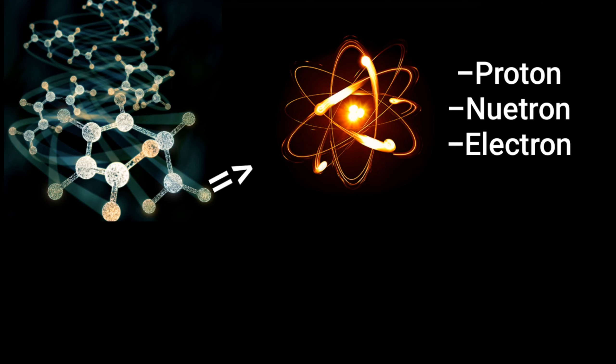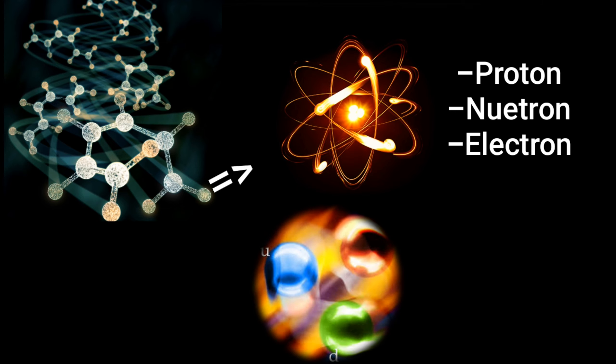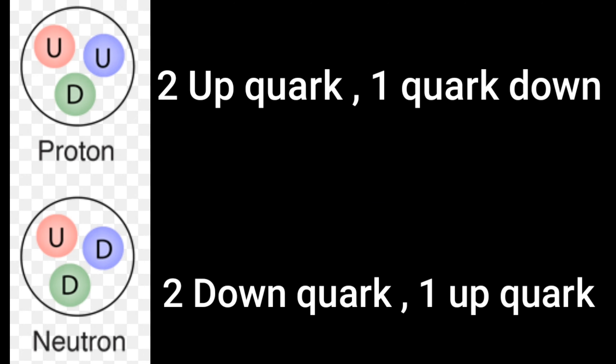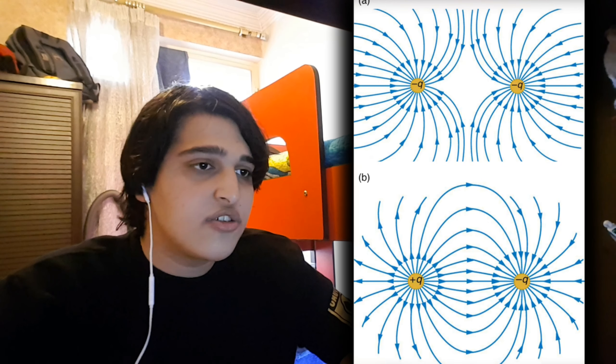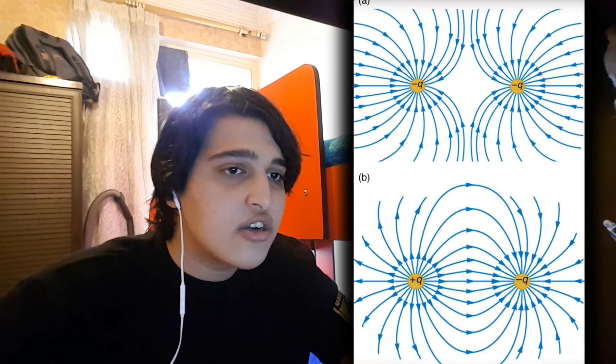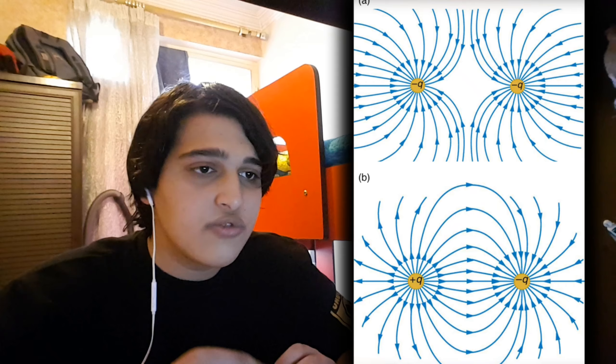If we continue this process more, we will reach tiny particles called quarks, and its different types distinguish between the proton and neutron. Similar particles are repelling each other because of the similarity in charge, and attraction occurs to two particles with different charge, and they share the charge or annihilate each other.